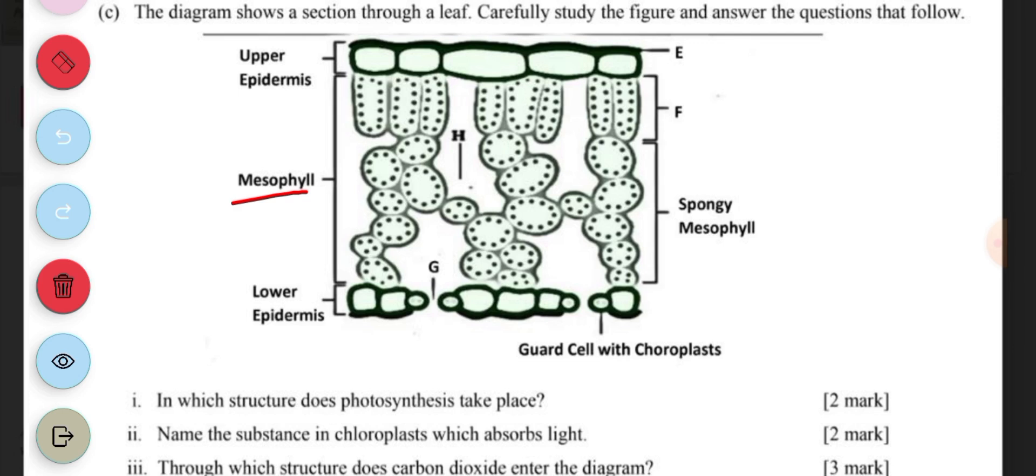The next one says: name the substance in chloroplast which absorbs light. Now in the chloroplast, you have the chlorophyll which absorbs light.